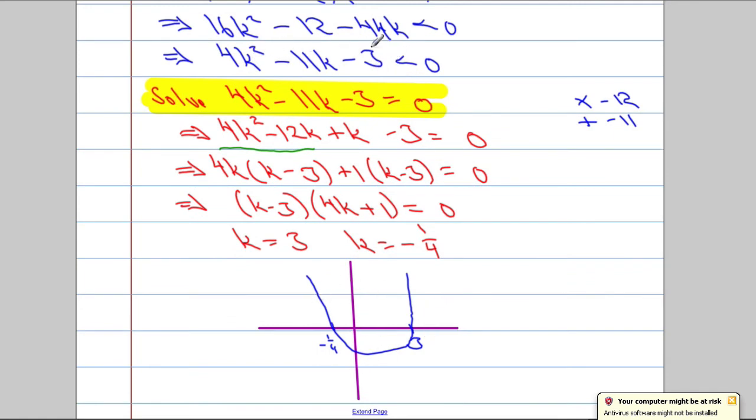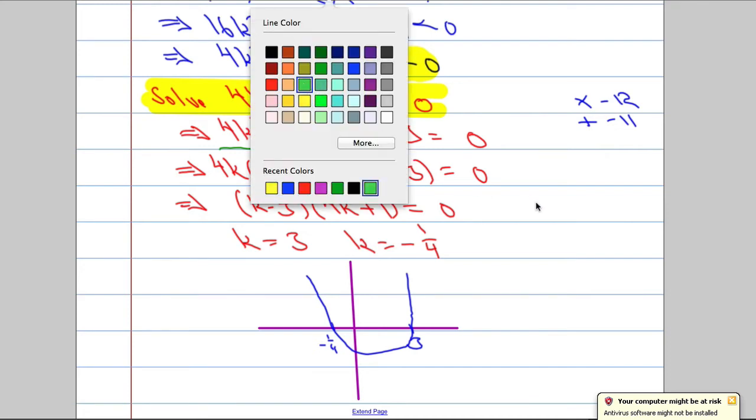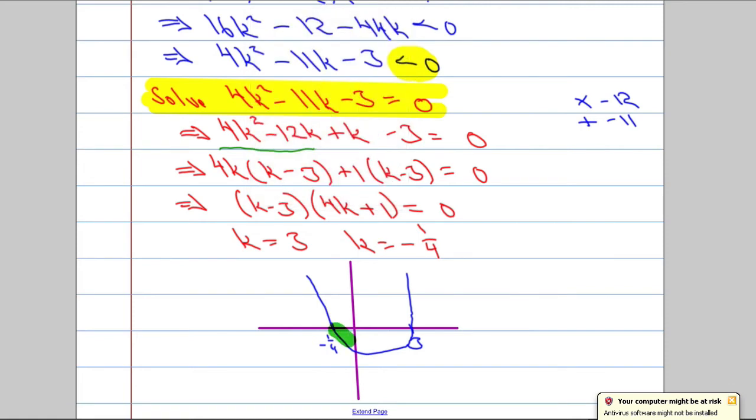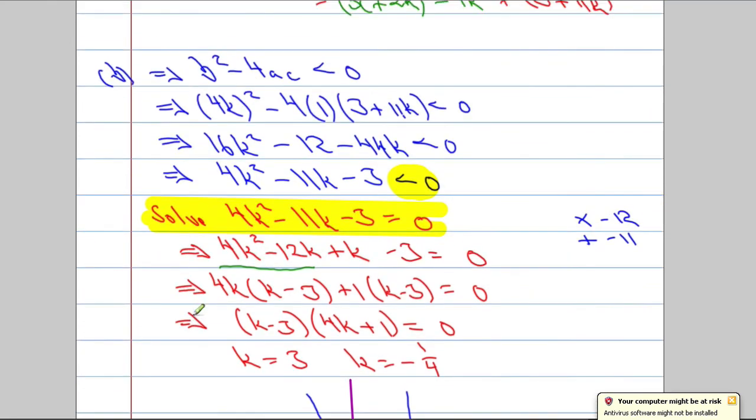Now the important thing is, that's what the graph would look like. But what do I want to know? Where is this function less than 0? Where is that function less than 0? It's less than 0 here. That's the region where it's less than 0. Which means that k must be less than 3 and k must be bigger than negative 1 quarter. So k must be between 3 and negative 1 quarter. So, there's possible values of k.